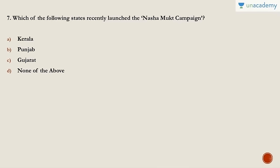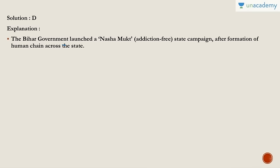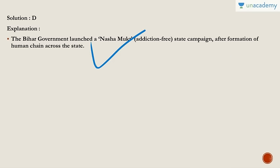Question seven: Which of the following states recently launched the Nashamukti campaign? The answer is Bihar. People might think Punjab because of the 'Utta Punjab' campaign, but that is not the case. The Bihar government launched the Nashamukti, or addiction-free state, campaign after the formation of a human chain across the state.